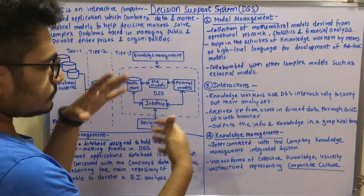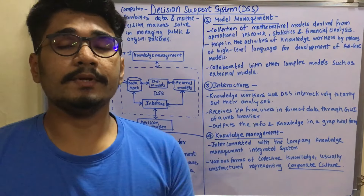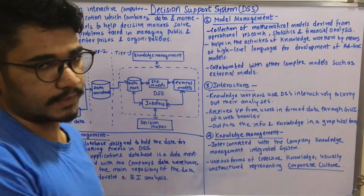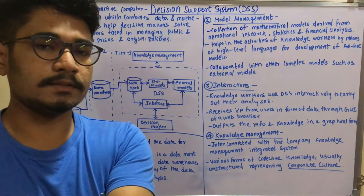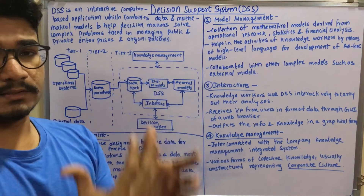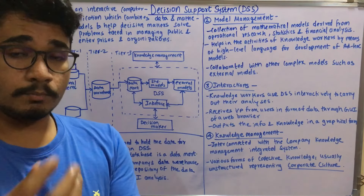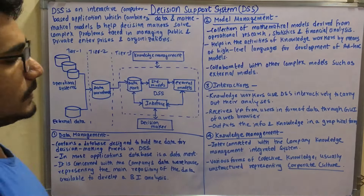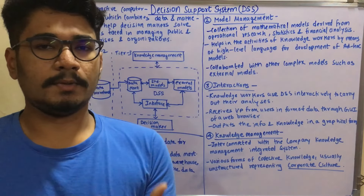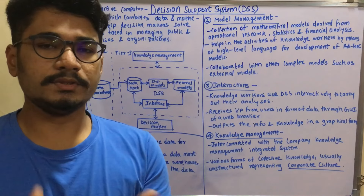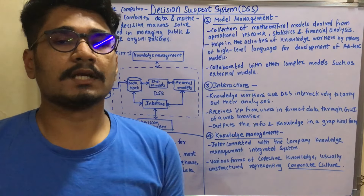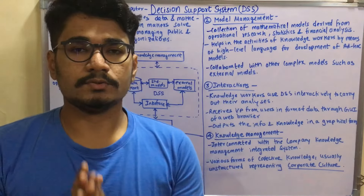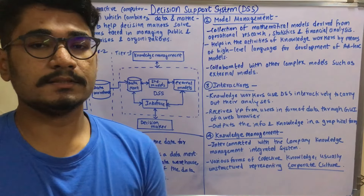Finally, knowledge management: when you get the data or information you have to manage it, and this is interconnected with the company's knowledge management integrated system. The company has its own separate integrated system that is collaborated with the DSS to make it more productive and effective. Various forms of collective knowledge, usually unstructured, represent the corporate culture. In most cases knowledge workers will encounter unstructured knowledge, which contributes to the corporate culture each organization or enterprise follows.